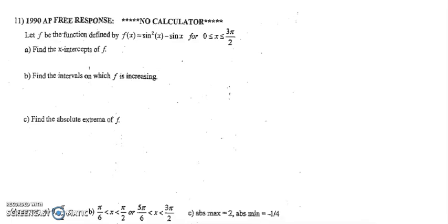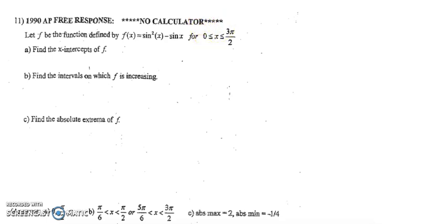This is a little bit of an old-school free response problem in how detail-oriented it is and in how much it requires you to know the unit circle. f(x) is given by sine squared x minus sine x, and only on this interval. So that's important to note — we're going to use that.